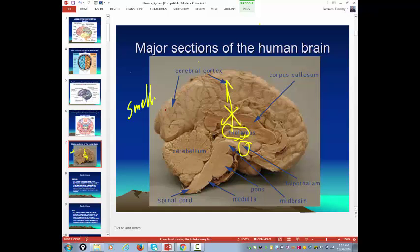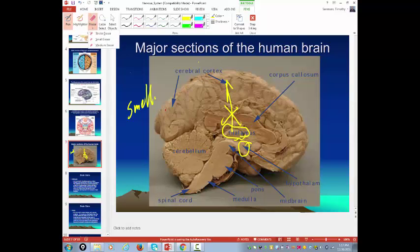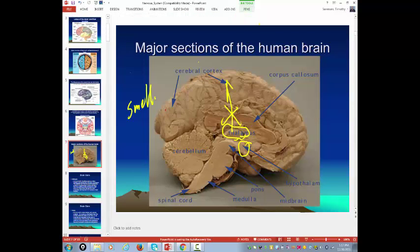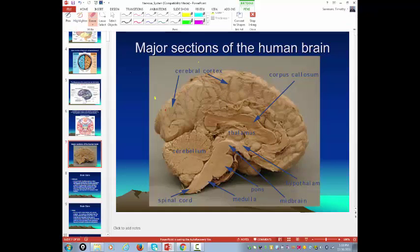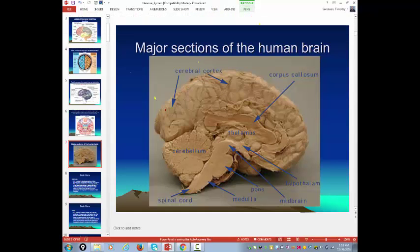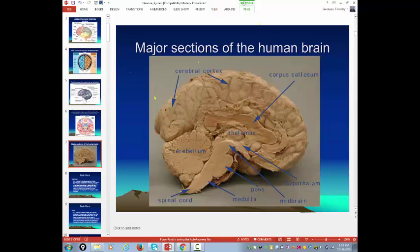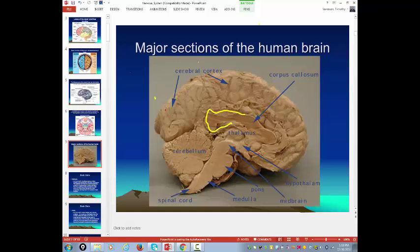So that's the thalamus. The thalamus, the only sense that doesn't go through the thalamus is the sense of smell. Everything else goes through the thalamus. Then you have this area right here called the corpus callosum. The corpus callosum connects the two hemispheres of the brain.